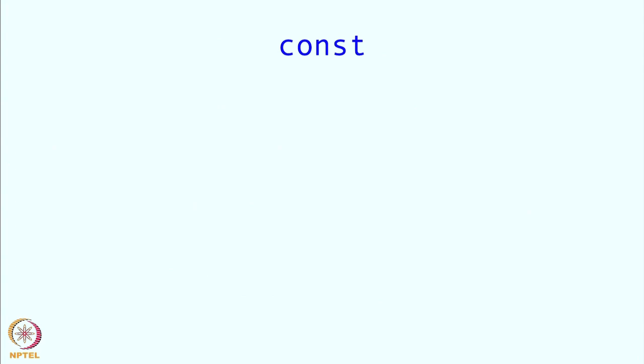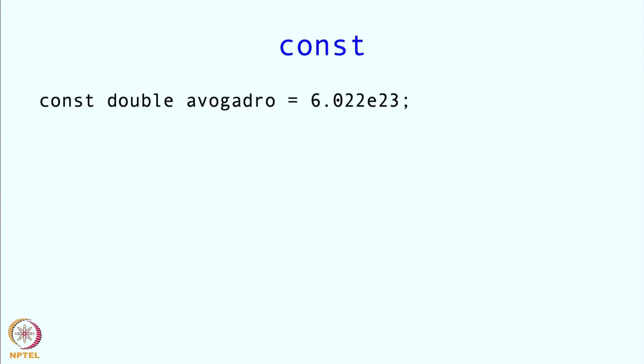There is also a keyword 'const' that you can attach to a variable definition. For example, 'const double Avogadro = 6.022e23' — this says you want space of type double to store Avogadro's number, but you are not going to modify this value once stored. Normally the value stored in a variable can be changed, but with const you declare beforehand that you do not intend to change it, and if you mistakenly try to change it the compiler will warn you.